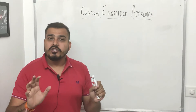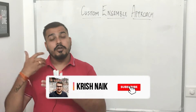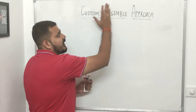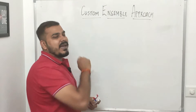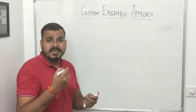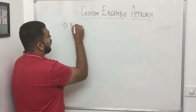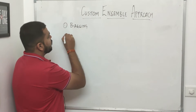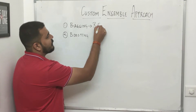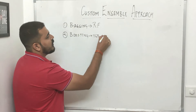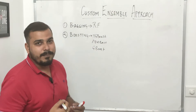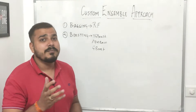Nowadays this kind of approach is commonly used by many companies and many data scientists. We'll divide this into three sections. First, let's discuss ensemble. You may have worked with ensemble algorithms. The best examples are bagging and boosting. In bagging, the example is random forest; in boosting, examples include XGBoost, AdaBoost, and gradient boost.